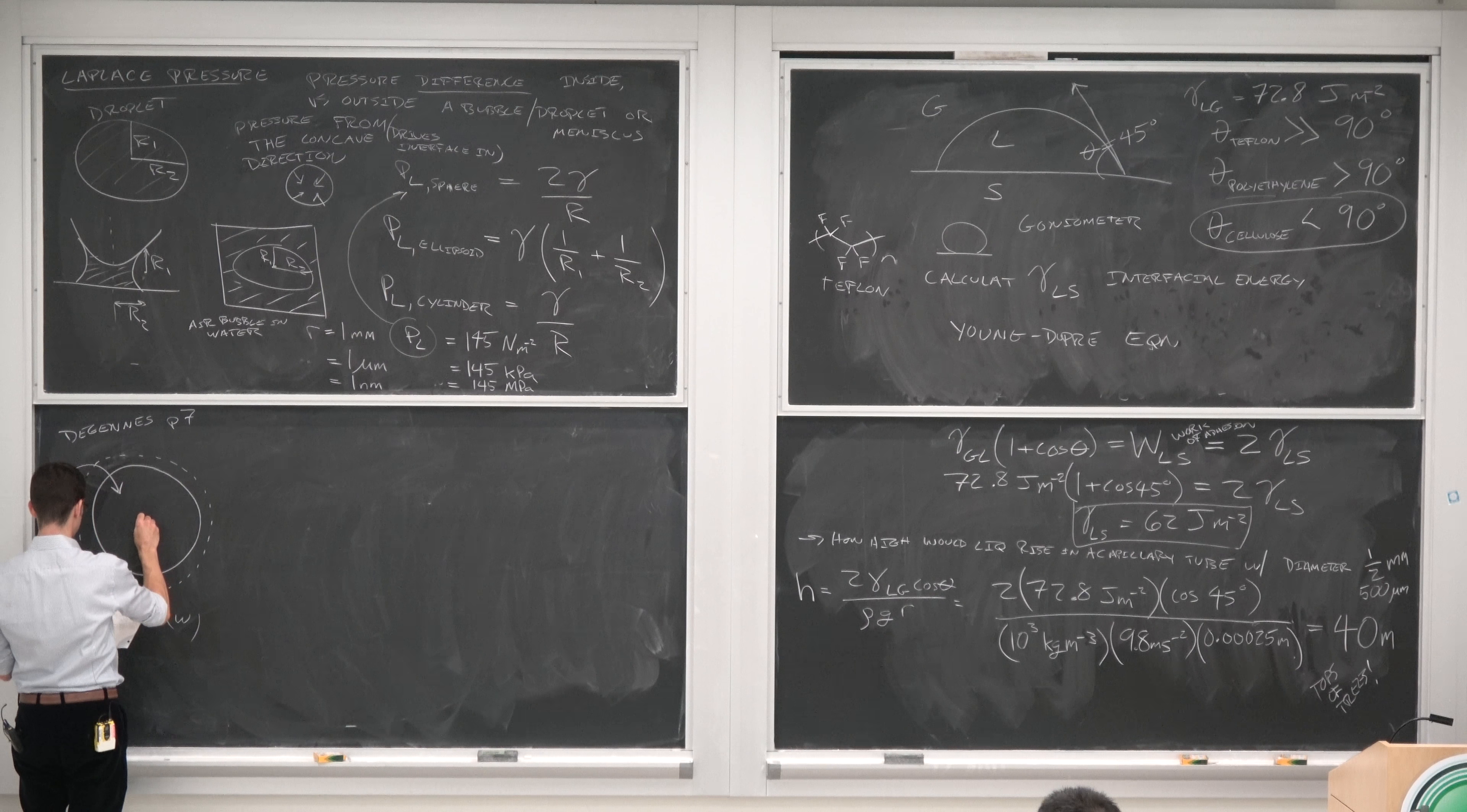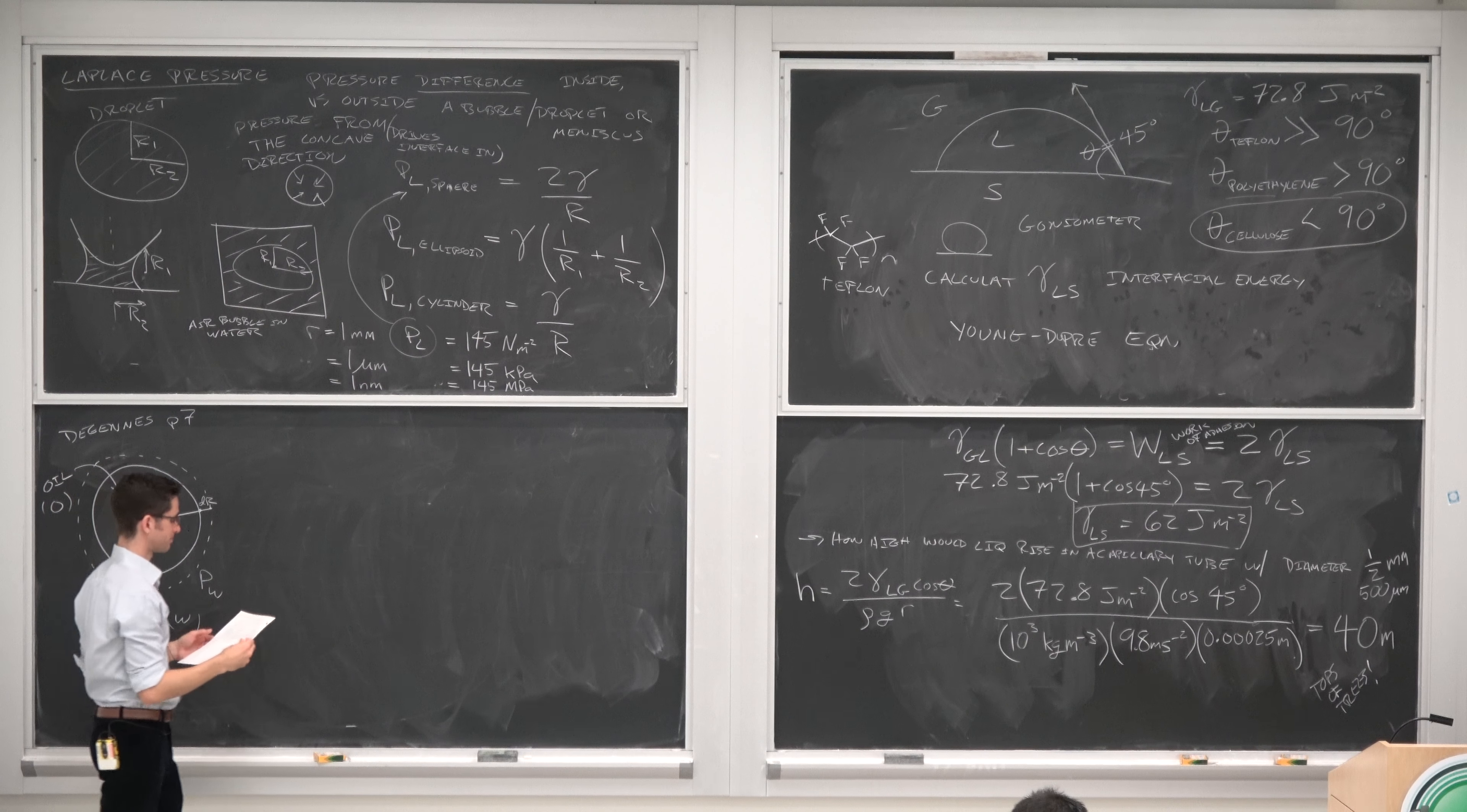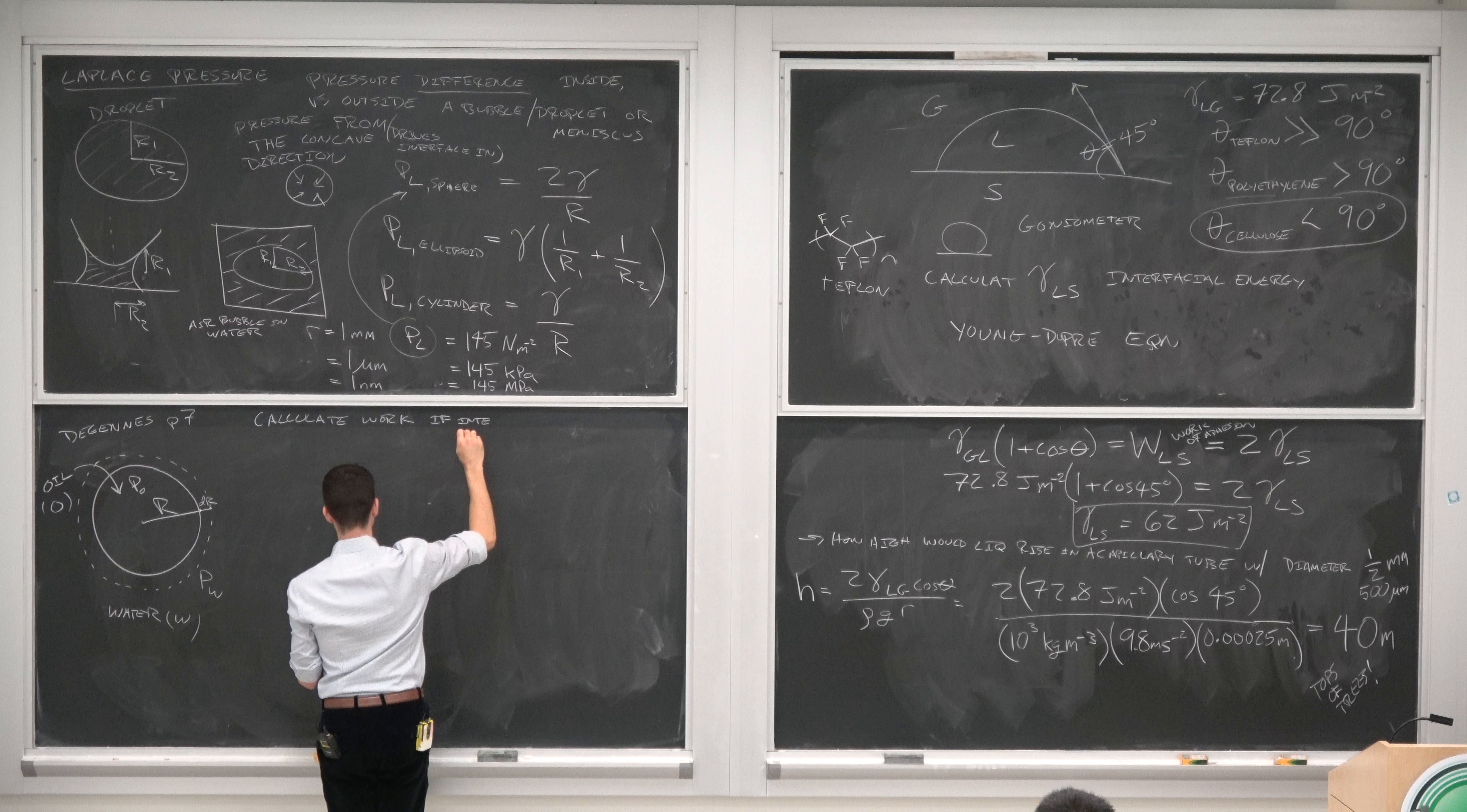So this droplet has radius R and we're extending the radius by some distance dR, and we have the pressure of the oil on the inside and the pressure of the water on the outside. So our goal is to calculate work if the interface is displaced by dR.